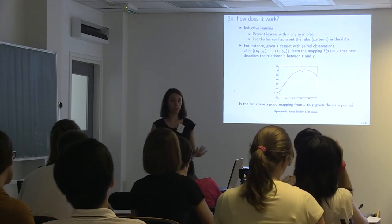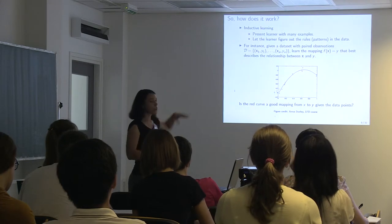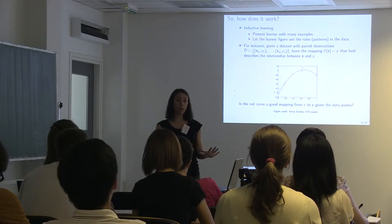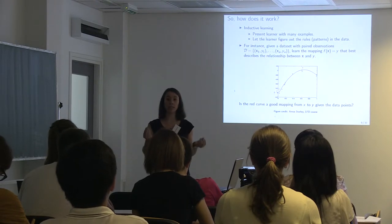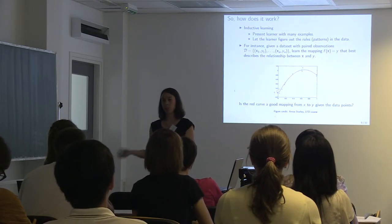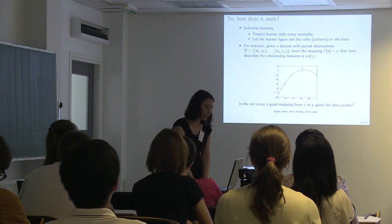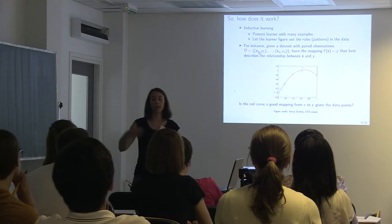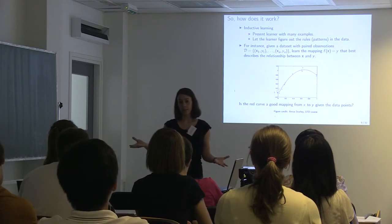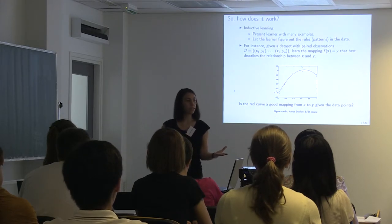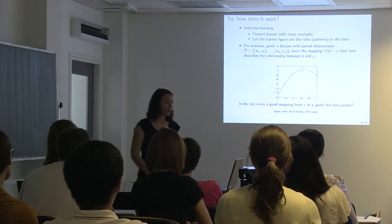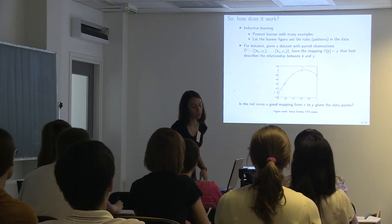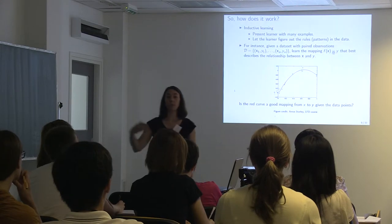In more detail: we have a learner, we have many examples, and we give those examples to the learner and let it figure out what process generated the data. To introduce notation — our data D comes in pairs. For example, x is the average height of someone's parents and y is the person's height. We have pairs of observations for many individuals, and we want to learn a mapping — a function that maps from x to y.